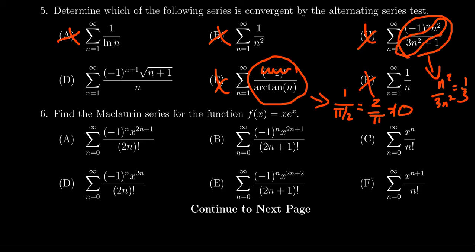So it would appear that by process of elimination, D is the only correct answer, but we might have actually found this earlier. Again, ignoring the negative 1 to the n plus 1, if we look at top and bottom, this sequence is essentially the square root of n over n, which is to say 1 over n to the 1 half.